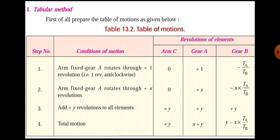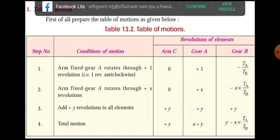For gear B, we apply the train value. The train value is Ta divided by Tb, where Ta is the driver and Tb is the driven. So gear B gets minus Ta over Tb.